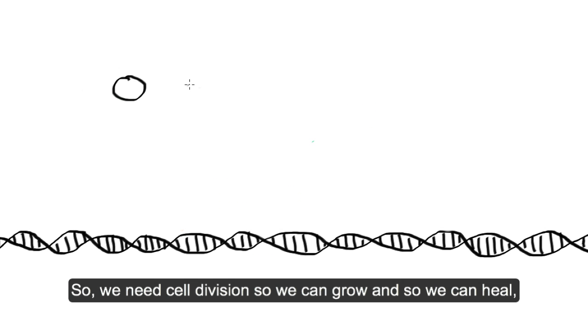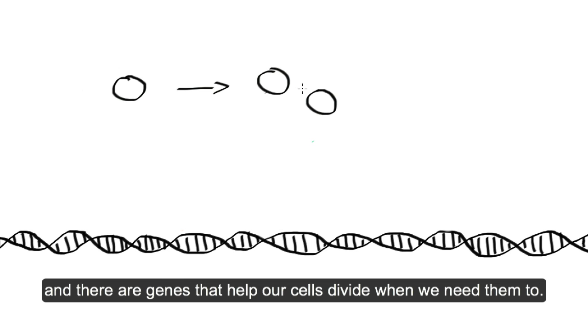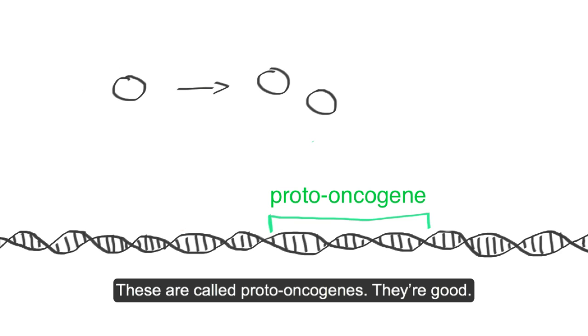So we need cell division so we can grow and so we can heal. And there are genes that help our cells divide when we need them to. These are called proto-oncogenes. They're good.